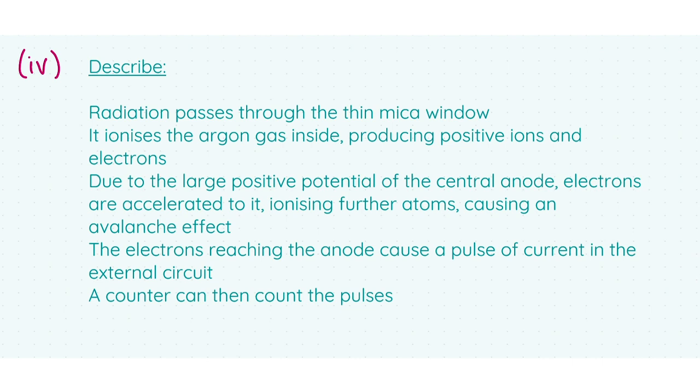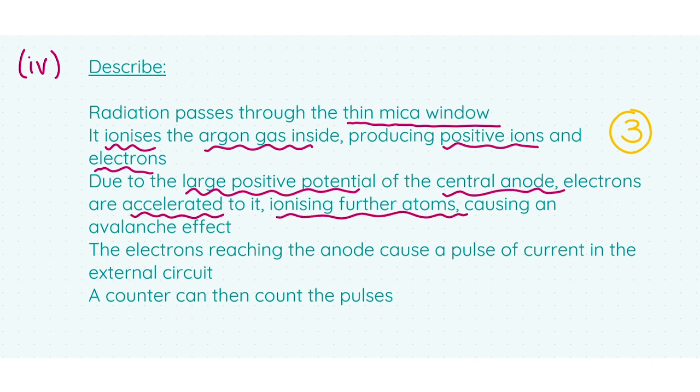Here's the description which will get us the bulk of our marks. This detector operates as follows: radiation passes through the thin mica window and it ionizes the argon gas inside, producing positive ions and electrons. This explanation will get you your first three marks. Your next three marks will come from this explanation: Due to the large positive potential of the central anode, electrons are accelerated to it, ionizing further atoms, causing an avalanche effect. Three marks.